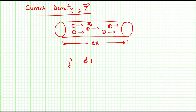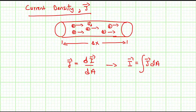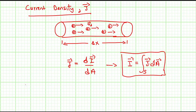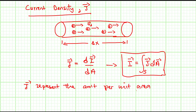Current density J is defined as dI divided by dA, which implies that I is the integral of J dA. This represents the amount of current per unit area. The SI unit of J is therefore amperes per meter squared (A/m²).